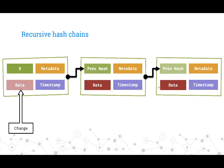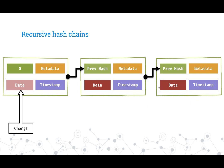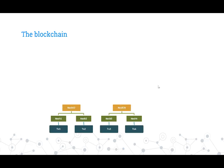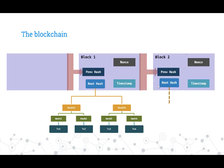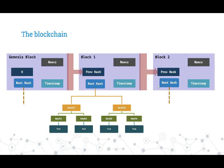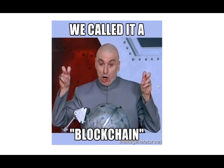Whenever we make a change at a particular link in the chain, all the links ahead of it get changed as well — that is what a recursive hash chain is. Now putting it all together: we have four transactions, create hashes, create another set of hashes, and get a root hash. We add a timestamp and a nonce — 'nonce' means 'number once generated,' just a random number to make the data more unique. This gives us a block. We take the hash from the previous block — the prevhash — and this completes our block. The very first block ever in the chain has zero instead of a prevhash, and that block is called the genesis block. This is what we call a blockchain.